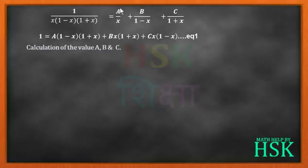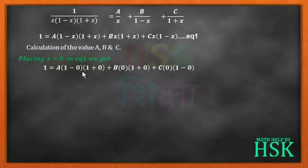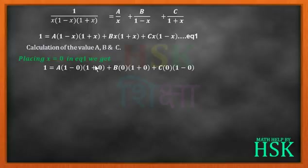Since the fraction with A has denominator x, I place x equal to 0 in equation number one. I get 1 equals A into 1 minus 0 into 1 plus 0, plus B into 0 into 1 plus 0, plus C into 0 into 1 minus 0. The terms with B and C become zero, and A equals 1.